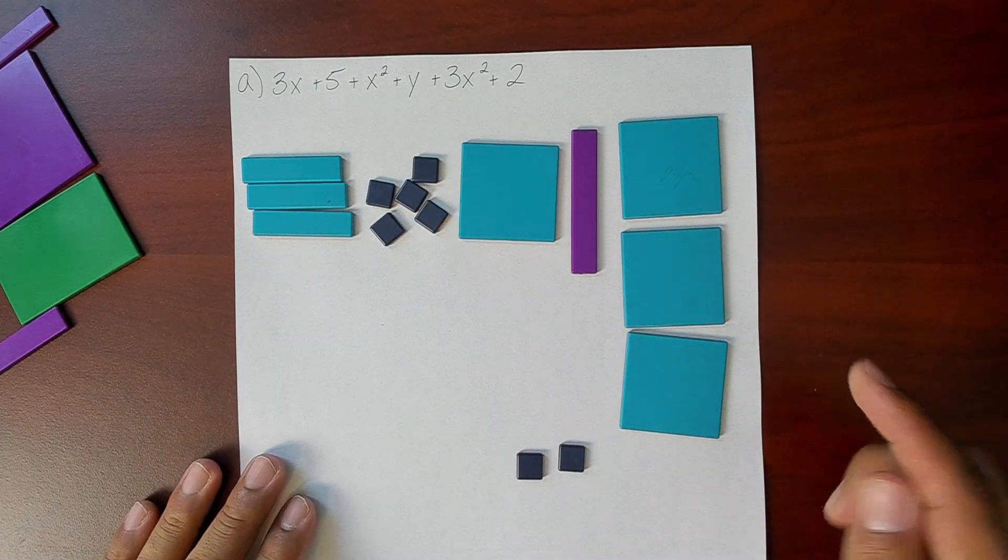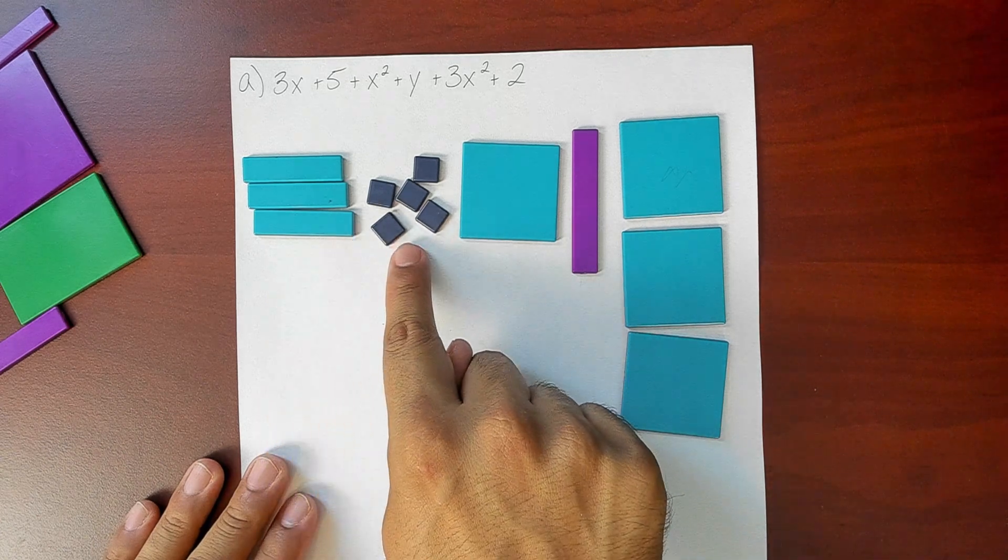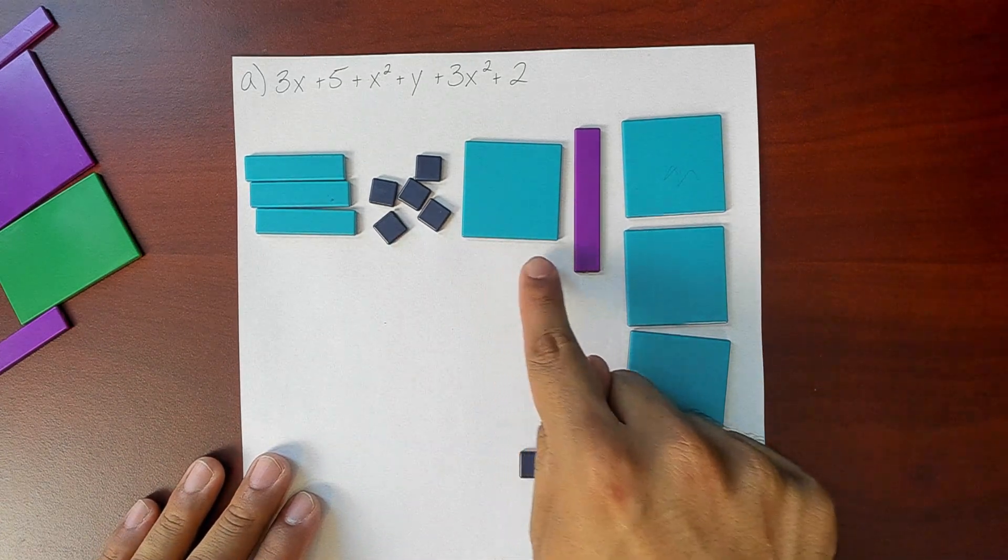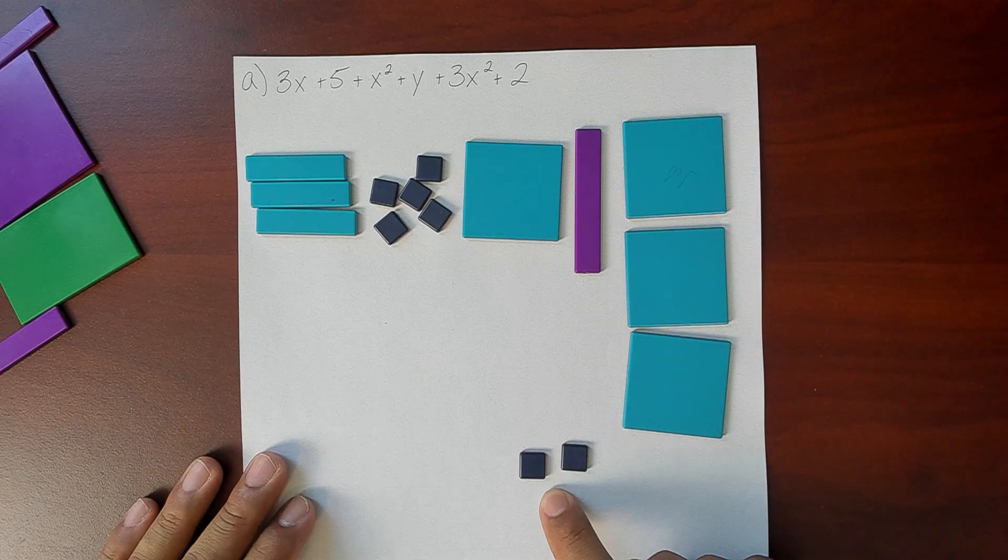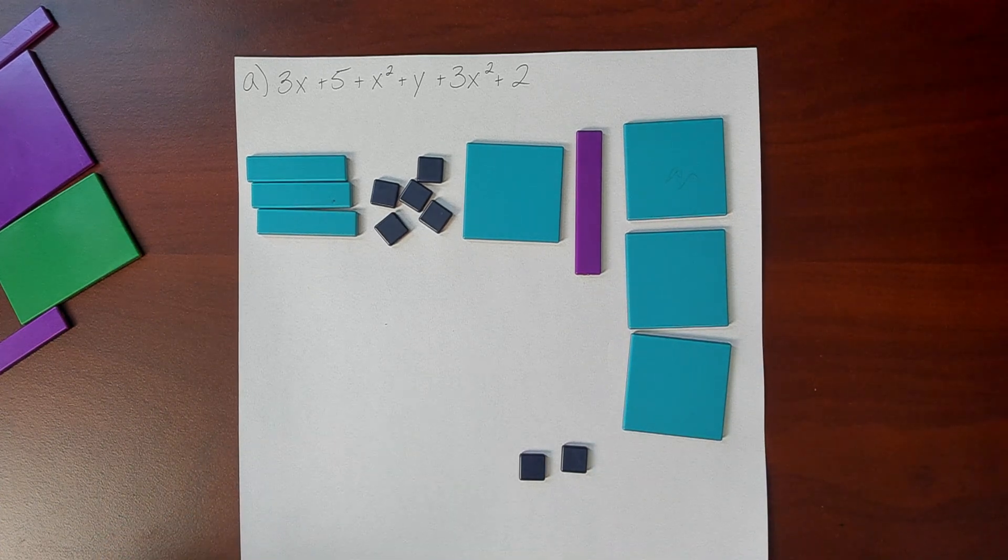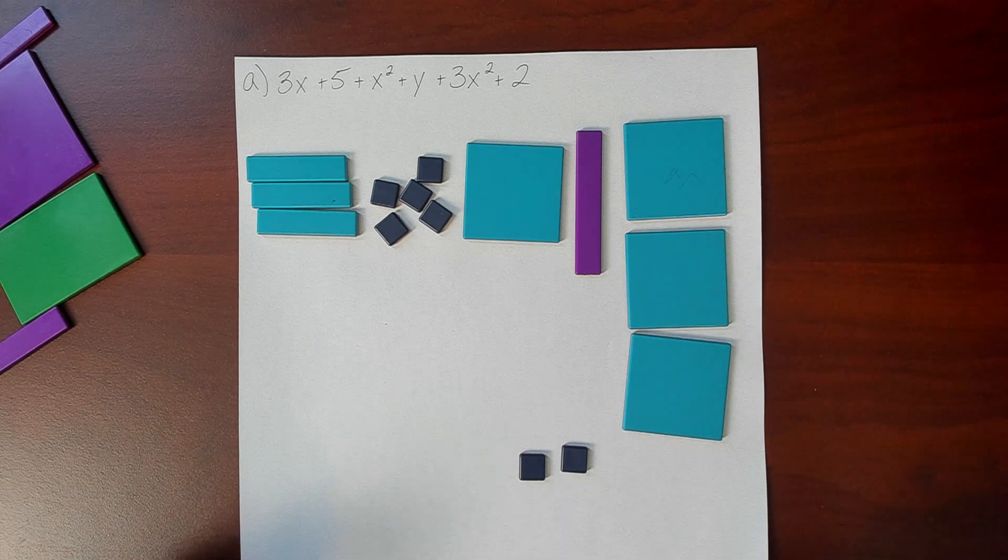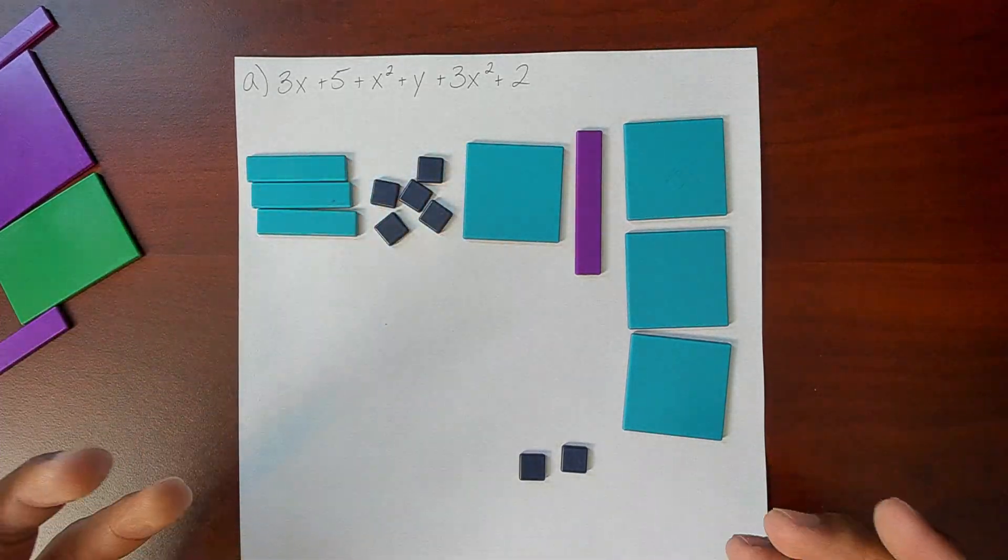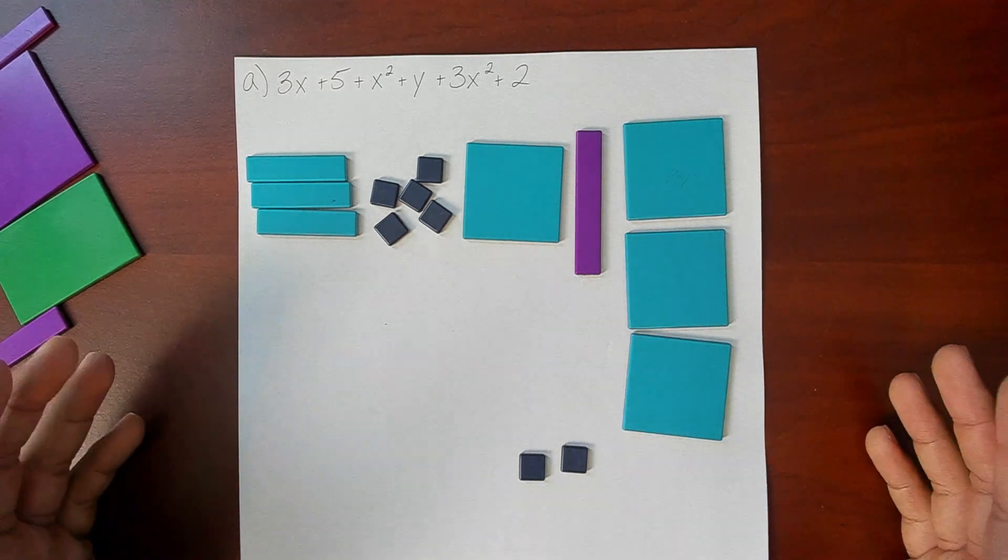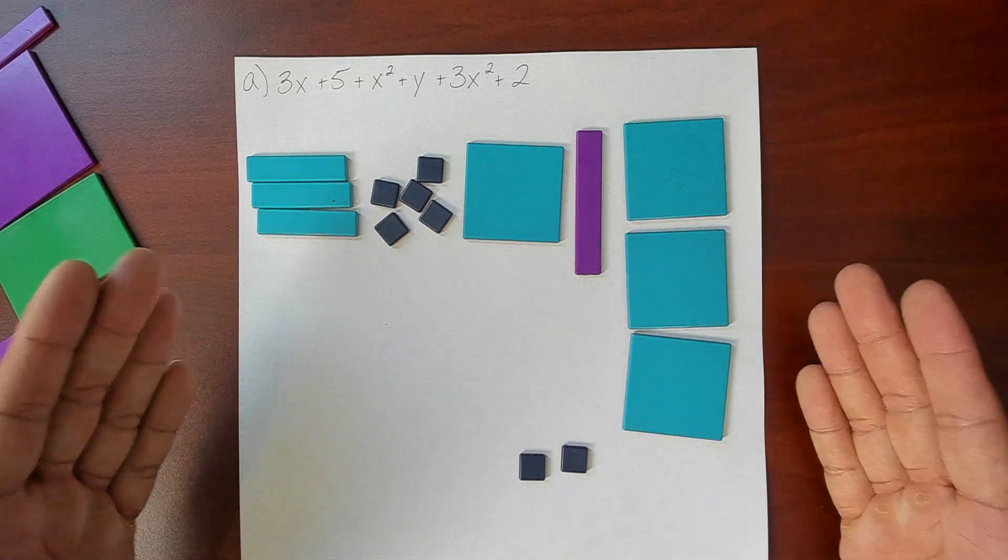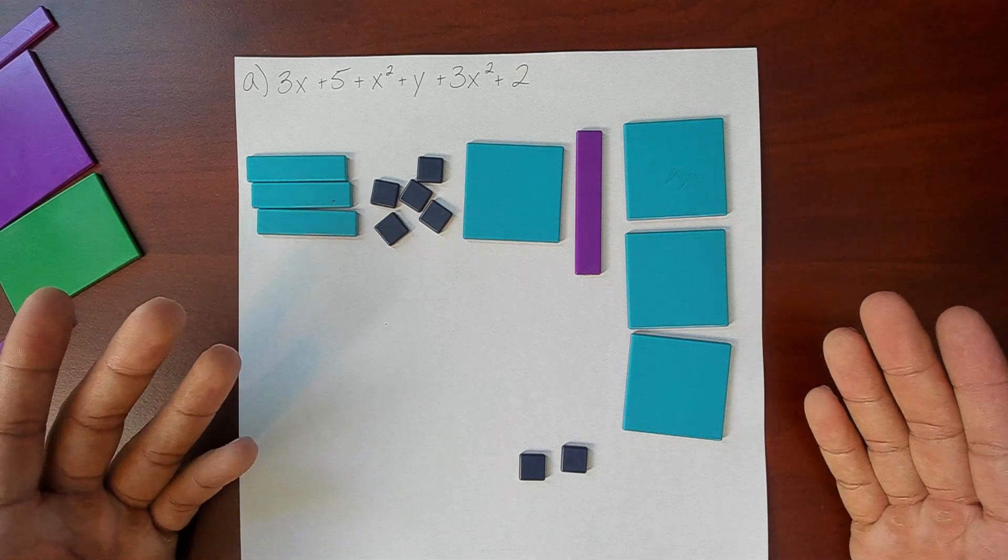So this is the expression here shown with our algebra tiles. We have 3x plus 5 plus x squared plus y plus 3x squared plus 2. And what the book wants us to do is it wants us to simplify this expression. It wants us to combine any like terms that we have.